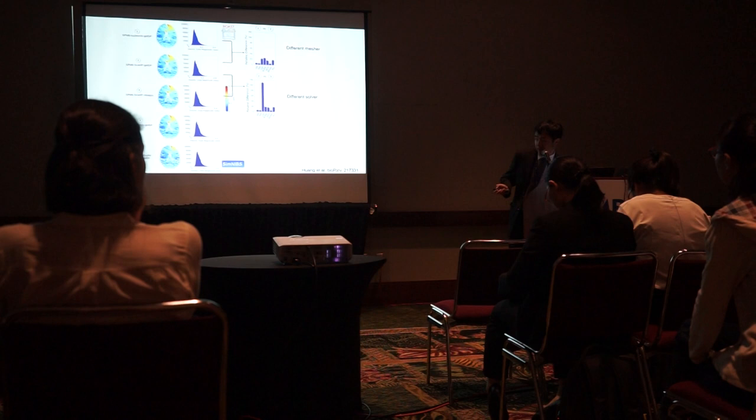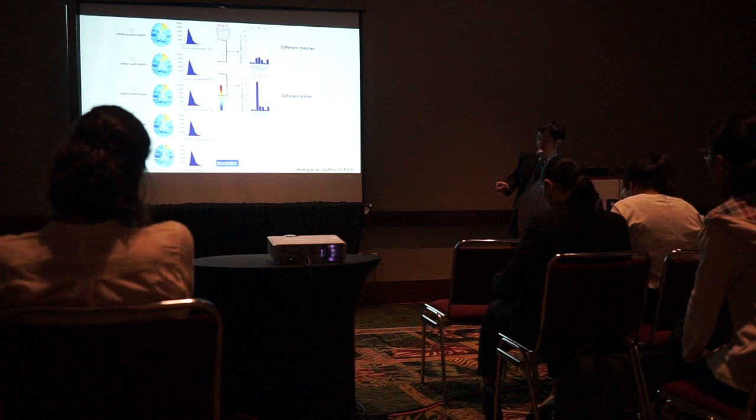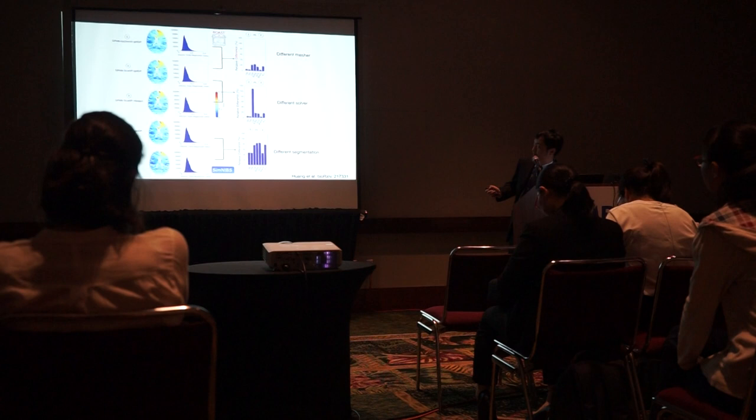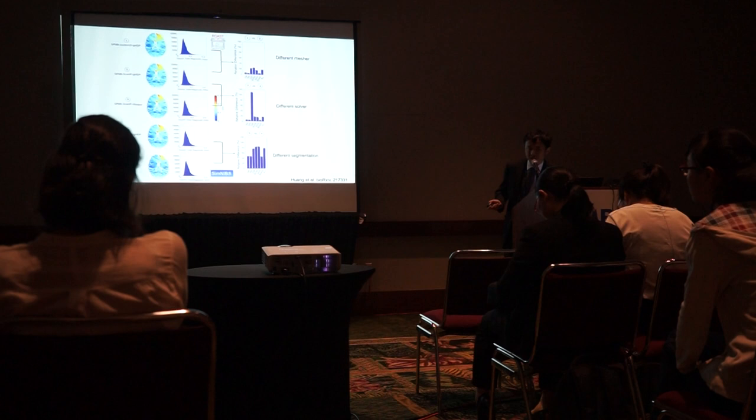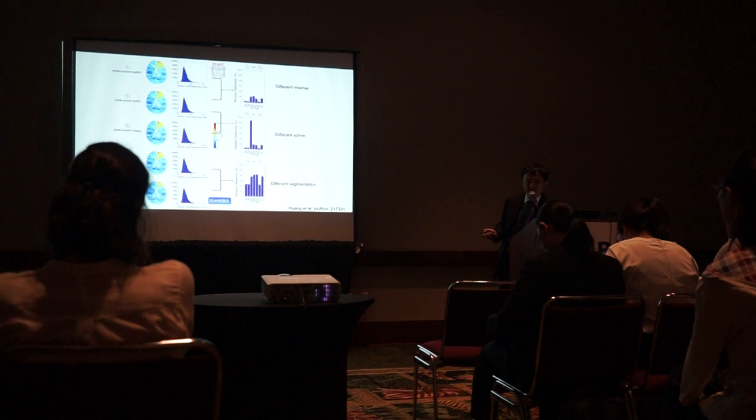If we compare the last two pipelines — comparing SPM versus FreeSurfer, which is essentially the difference in segmentation — we get a very high difference compared to the first two comparisons. In the brain, we get a difference of around 40%. So the reason we know from here is that the difference in segmentation indeed gives you very different electric field distribution predictions.